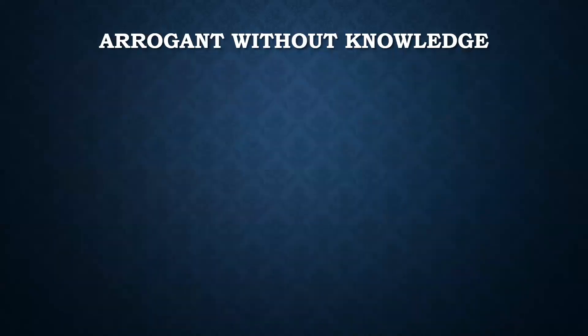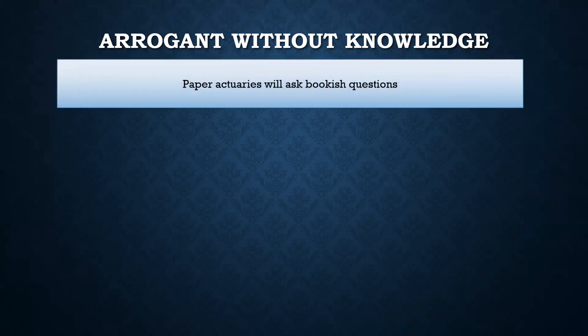The other type is arrogant but without knowledge — what we call paper actuaries. You are a qualified actuary, you've cleared your papers, but that's all you've done. This sort of person will ask bookish questions — for example, 'there is no surrender value in a term product, why is there no surrender value?' They themselves might have forgotten the answer to this question, but they remember the questions because that's how they passed the paper — for this sort of question you write this sort of answer. They might have forgotten the answer but remember the question, so they ask those questions.